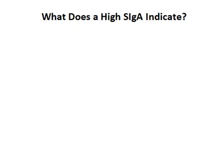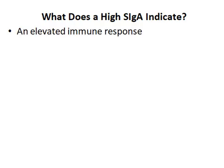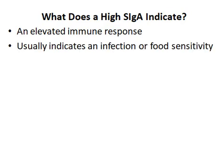So what does an elevated secretory IGA indicate? A high secretory IGA means that there is an elevated immune response and it usually relates to an infection or sometimes a food sensitivity.